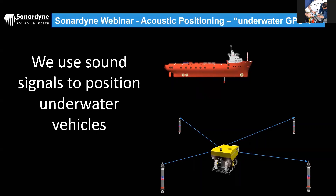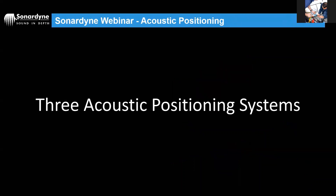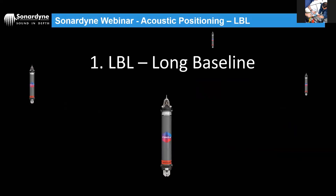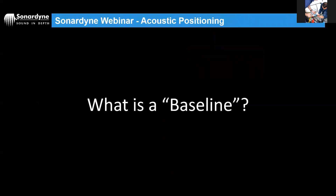We replace radio waves with sound — acoustic positioning — effectively creating an underwater GPS system. There are three types of acoustic positioning systems. We'll start with the one most like GPS: Long Baseline, or LBL. The key word is 'baseline.' What do we mean by a baseline in a positioning context? Give us a short definition.